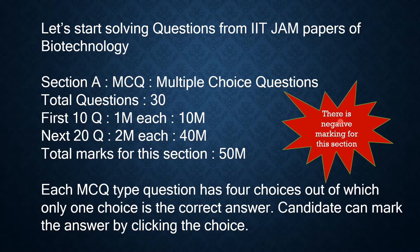Remember that there is negative marking for this section, so you have to be very careful when clicking the answer because there is a negative marking. As this is an MCQ type of question, four options will be given and one choice will be the correct answer, so you have to click on the correct choice.